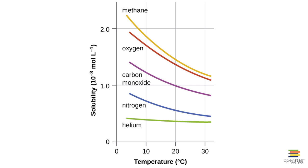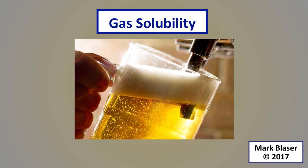A graph of solubility versus temperature for several different gases shows they all have this roughly inversely proportional shape. Different gases have different solubilities — helium is much less soluble than nitrogen, carbon monoxide is more soluble, and so on — but the temperature effect on solubility has the same general trend. And that is it for the gas solubility screencast.